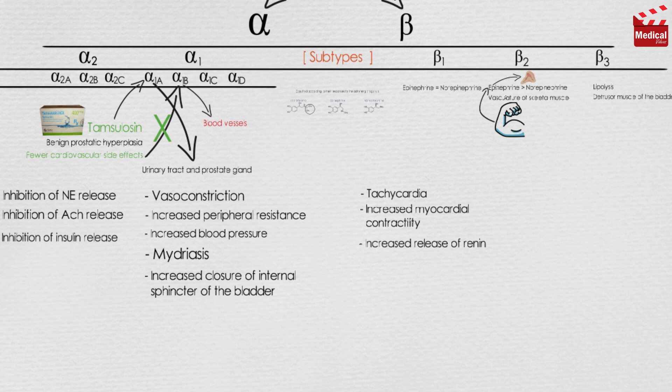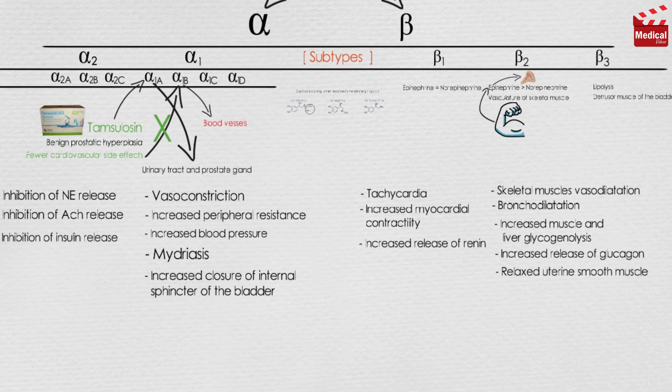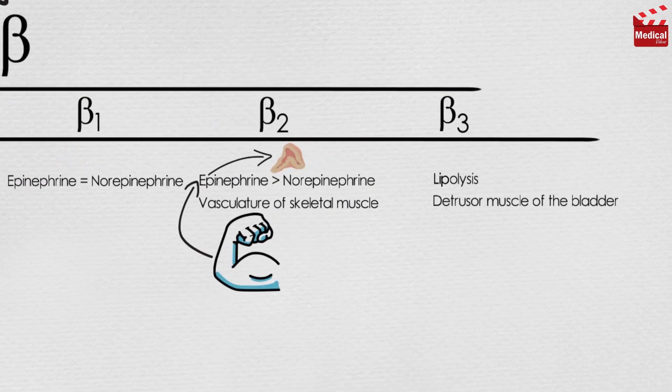The activation of beta 2 receptors produces skeletal muscle vasodilation, bronchodilation, increased muscle and liver glycogenolysis, increased release of glucagon, and relaxed uterine smooth muscle. The activation of beta 3 receptors increases lipolysis.